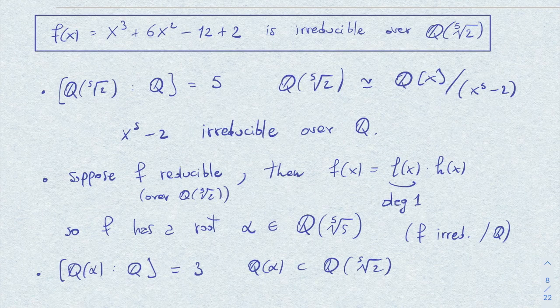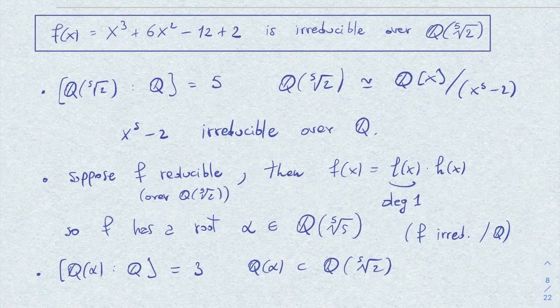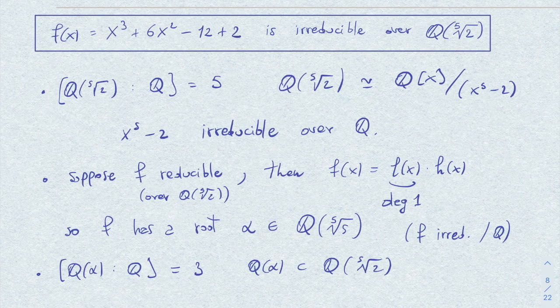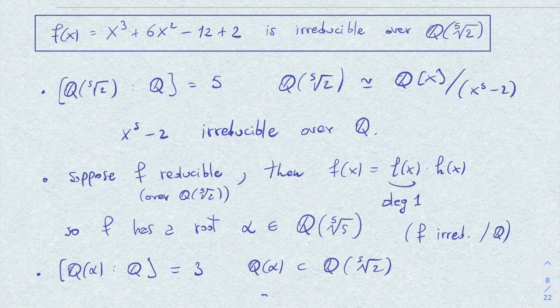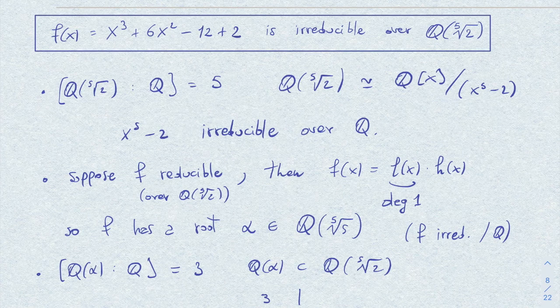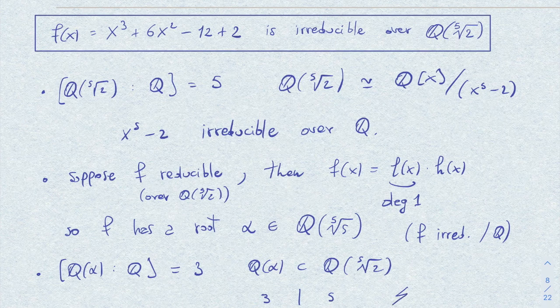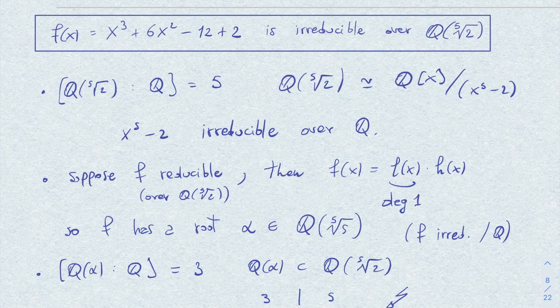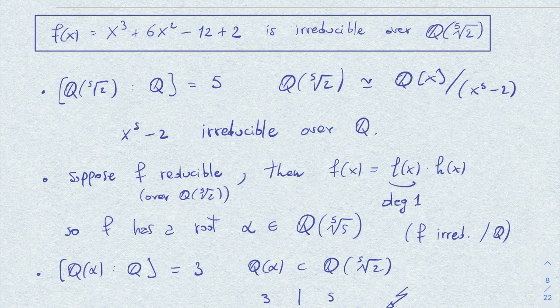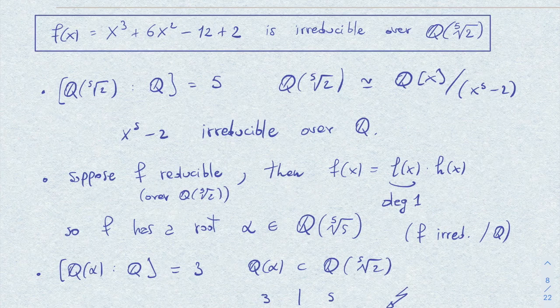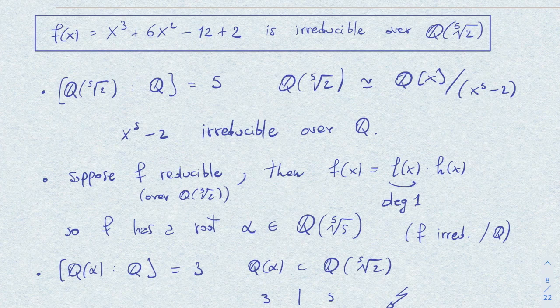Therefore, by the degree theorem, or Lagrange if you want, the degree of this extension, which is 3, has to divide the degree of this one, which we computed to be 5. This is clearly a contradiction, and we conclude that f is also irreducible over the extension Q by fifth root of 2.